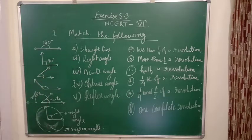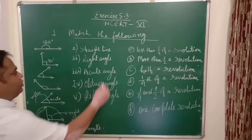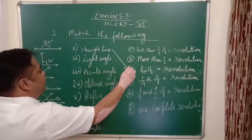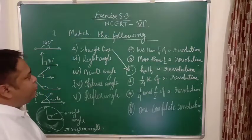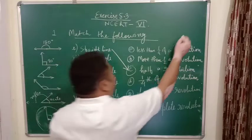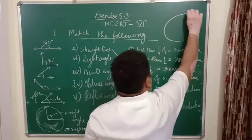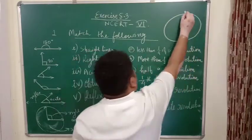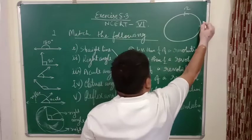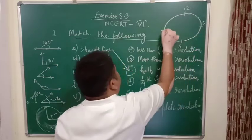Now straight line means half of a revolution. They are talking in context to clock. Previous exercise was based on clock. So half a revolution. Say if it is a clock, 12, 3, 6, 9...